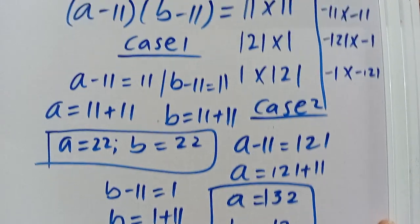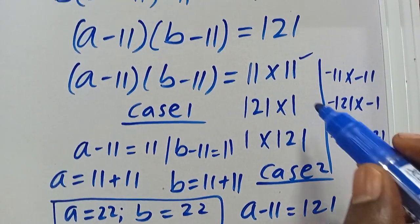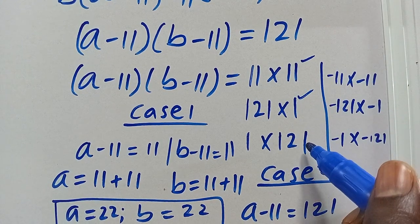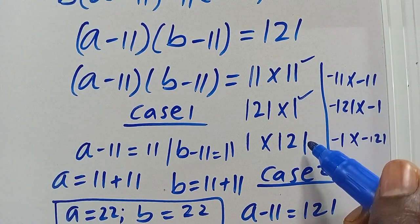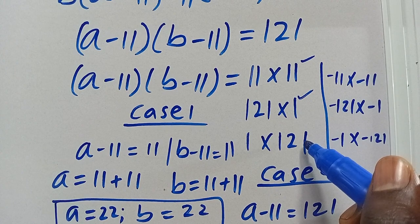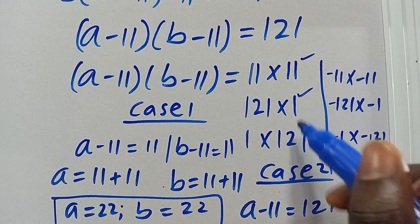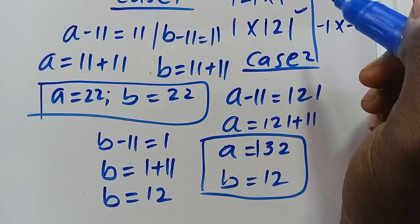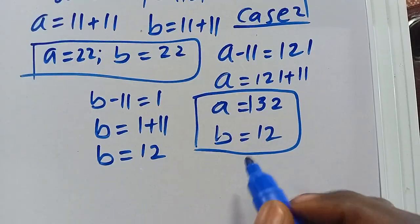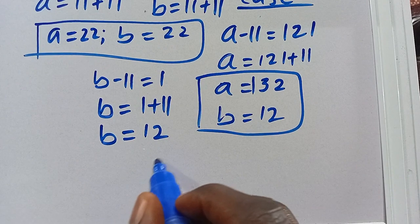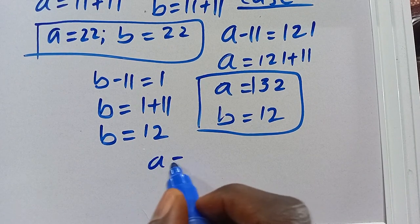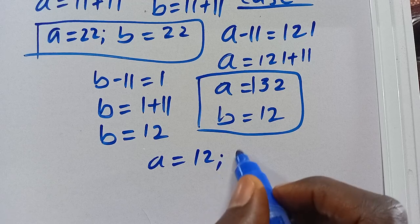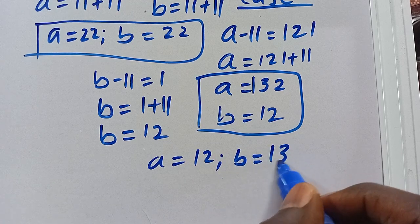Case 3 is the reciprocal of Case 2. So we have A equals 12 and B equals 132 as another solution.